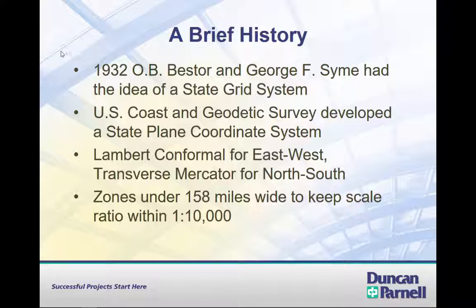If we take a basketball and slice off a surface and try to push it down flat onto a table, there's going to be some error. Same thing here — we're taking a rounded surface and projecting it onto a flat surface. If we keep the zones less than 158 miles wide, the error will be better than 1 in 10,000. That's why in some states like Virginia, you have a north and a south zone, or Georgia has an east and a west zone — to keep that error better than 1 in 10,000.